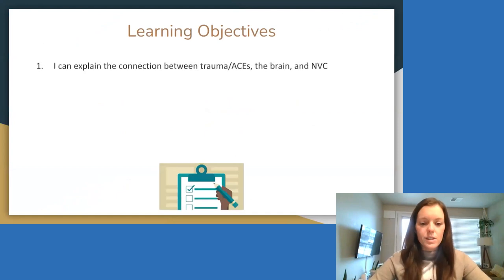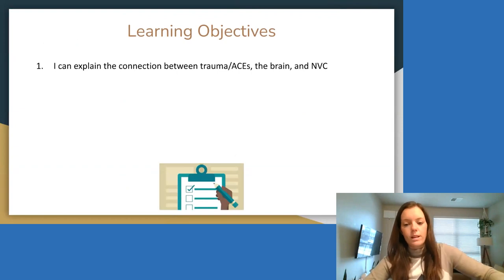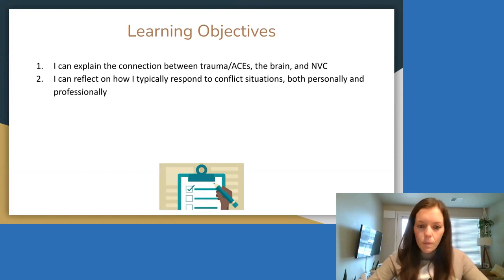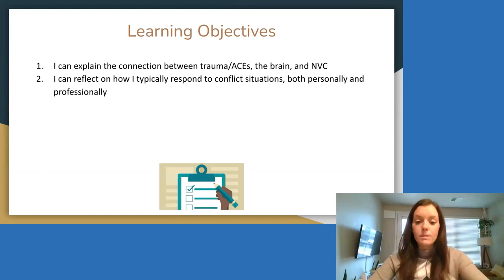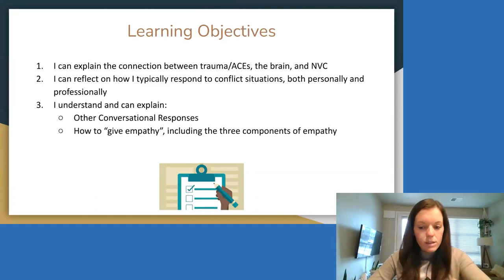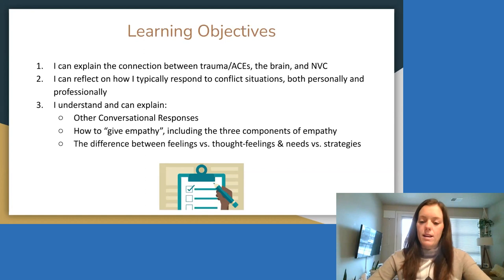Our learning objectives for today are focusing briefly on trauma. All of you have probably heard of adverse childhood experiences, so we'll move through that quickly. The key point is the connection piece between trauma, ACEs, and the brain, and nonviolent communication. We're going to talk about how you typically respond in conflict situations, both personally and professionally. By the end, you'll be able to explain what other conversational responses are, how to actually give empathy, including the three components of empathy, and the difference between feelings versus thought feelings, and needs versus strategies.